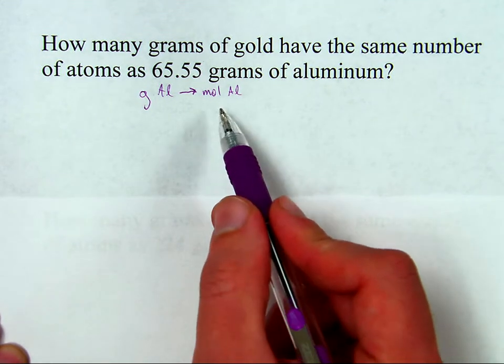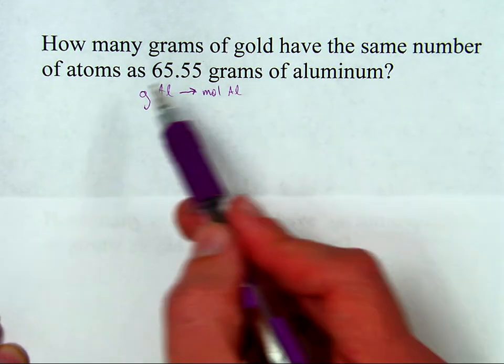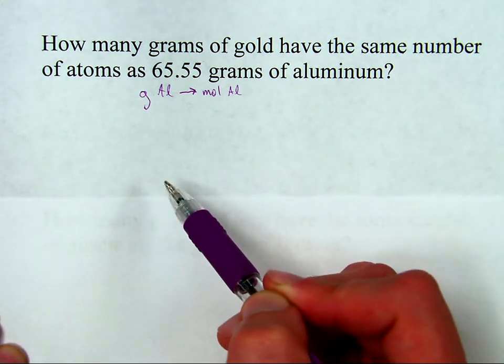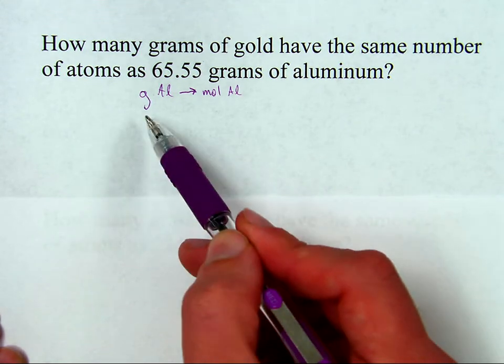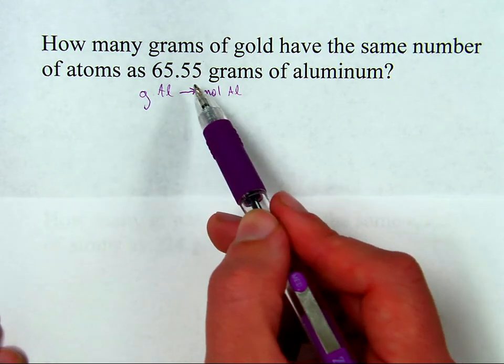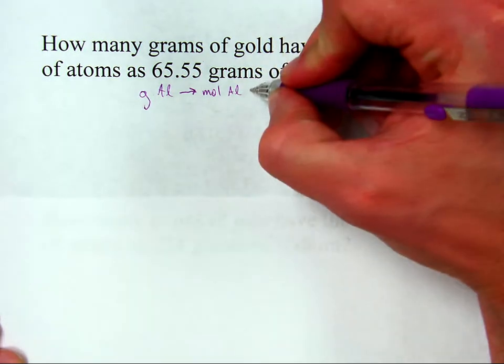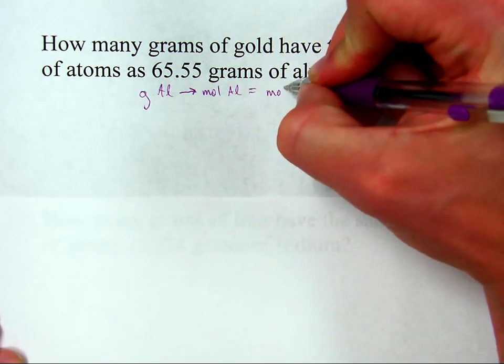And I'm going to take advantage of a special property. See, moles is just how many things you have. So if they have the same number of atoms, they have the same number of moles. So that means once I convert grams of aluminum to moles of aluminum, that's equal to moles of the other material.